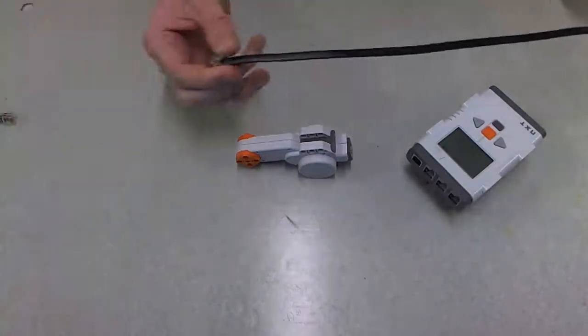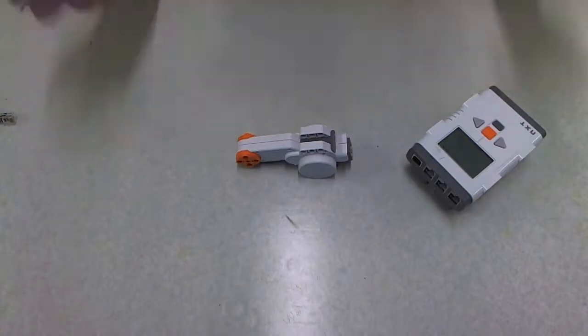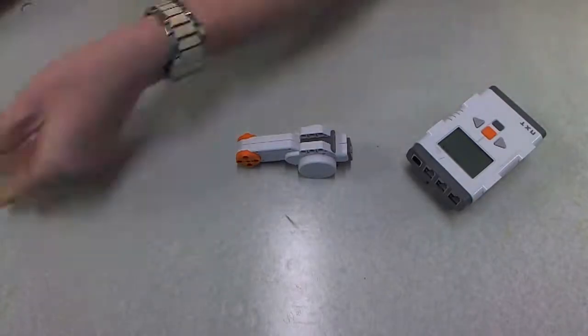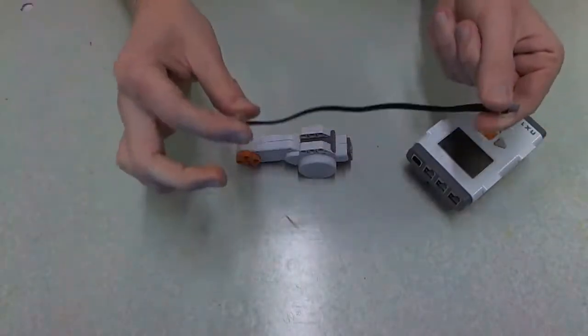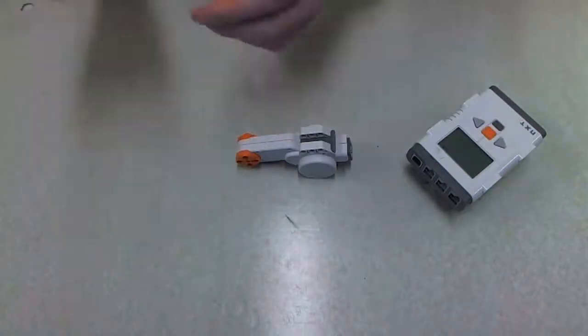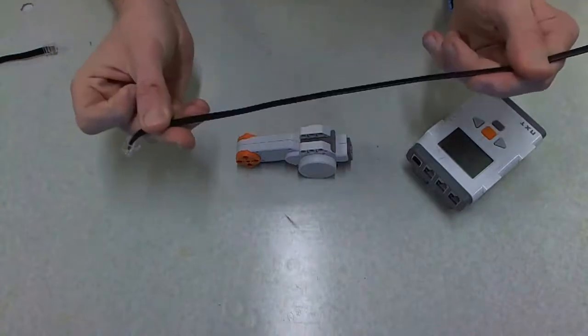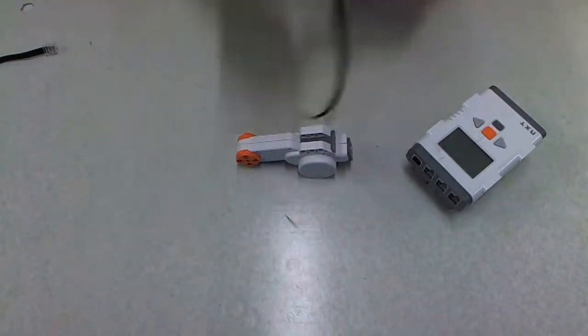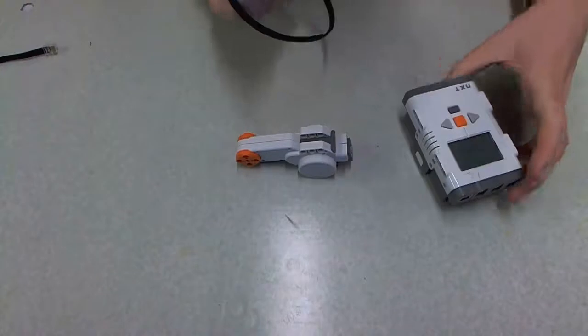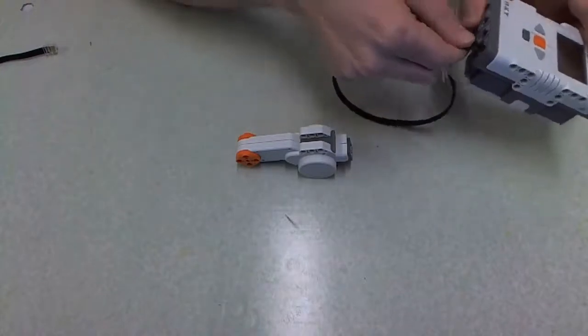You've got three cables that come with kits. A really long one, a really short guy, and medium size. These cables can only go in one way. You could mistake them with a phone line, but they're not. They're a little bit different. The clip's offset. It's very simple. It only goes in one way.